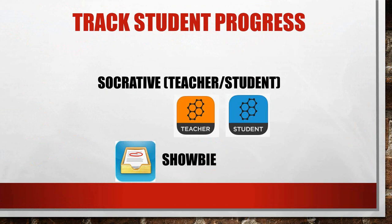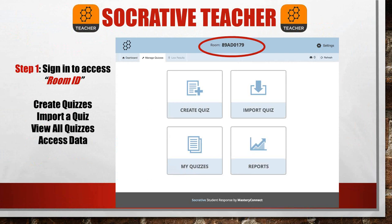The next teacher usage is how to track student progress, which can be done through the Socrative application. The teacher downloads the Socrative teacher application and students download the student Socrative application. This is a screenshot of the Socrative teacher application from my personal teaching iPad. The first step is to sign in to access your room ID number, which can be shown to students so they can enter and take the quiz. Socrative is an excellent application where you can create your own quizzes directly, import a pre-existing quiz, view all previous quizzes, and most importantly access all the student data you collect.